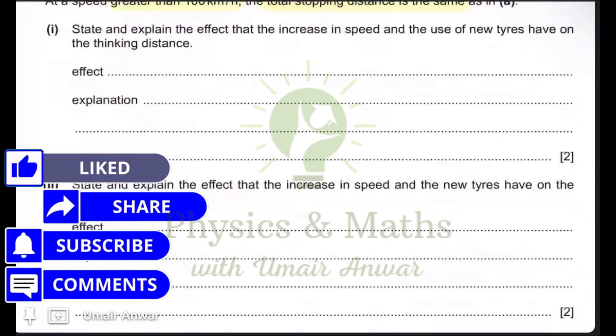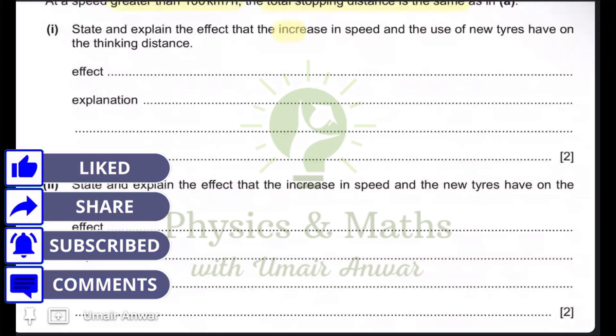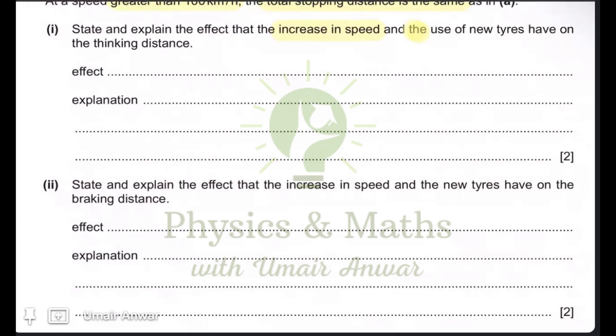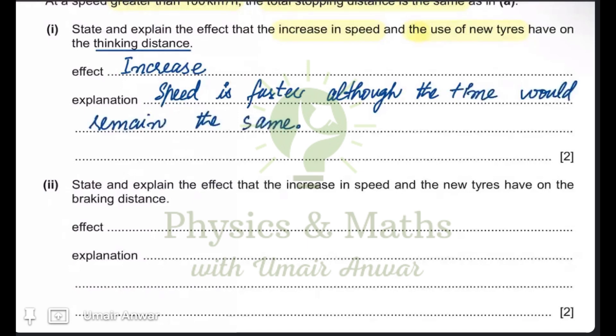State and explain the effect that the increase in speed and the use of new tires - so these are the two factors - have on the thinking distance. What would be the effect of these two factors on the thinking distance? The effect would be that it is going to increase. And why is it going to increase? Because speed is faster. Although the time would remain the same - the time in which the driver is going to make a decision and apply the brakes is going to remain the same - but the thing which is going to be important here is that since he was moving at a faster speed, the distance covered is going to increase here.